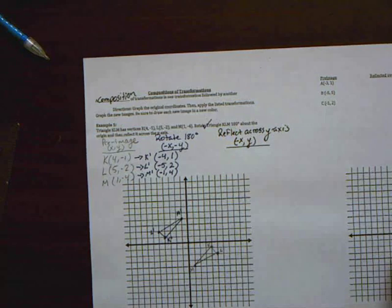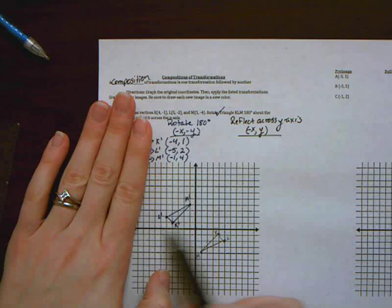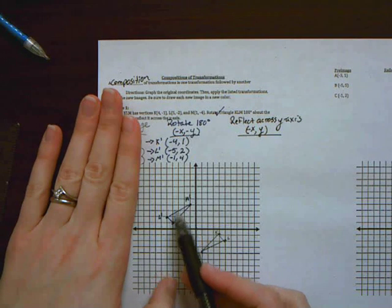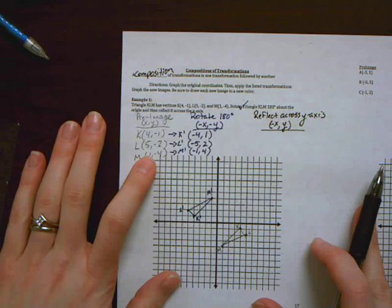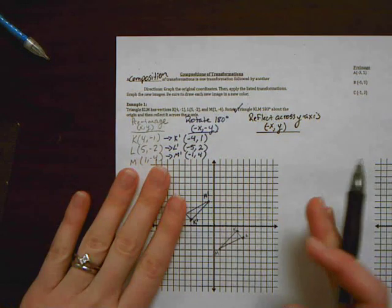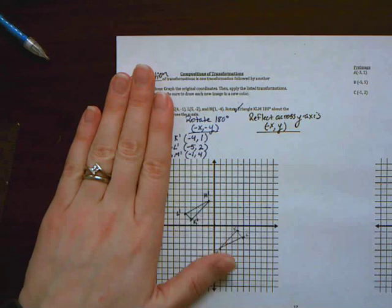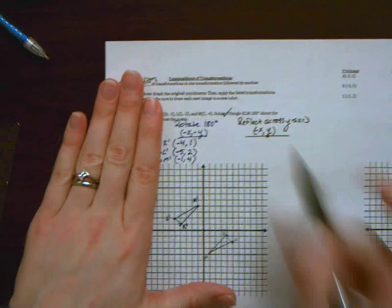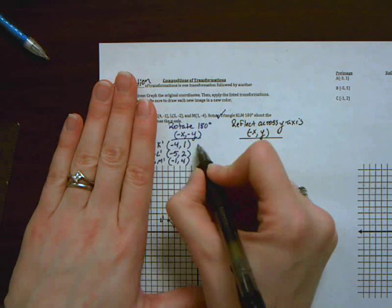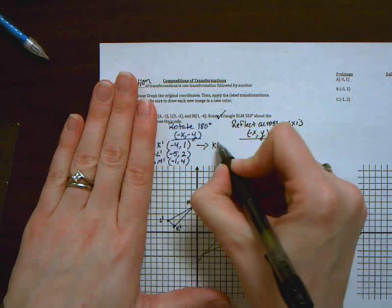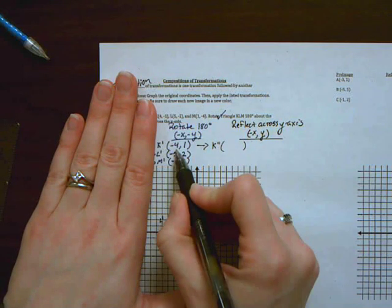Now something that you have to think about with these composition of transformations is I am now trying to reflect this image. So it kind of becomes my new pre-image. So I'm ignoring these original ordered pairs now. This is different from when we're doing multiple examples on the same graph. I am going to ignore this and treat these as my original coordinates. So when I change x to its opposite, that means whatever it was here, I want the opposite in my new ordered pair.